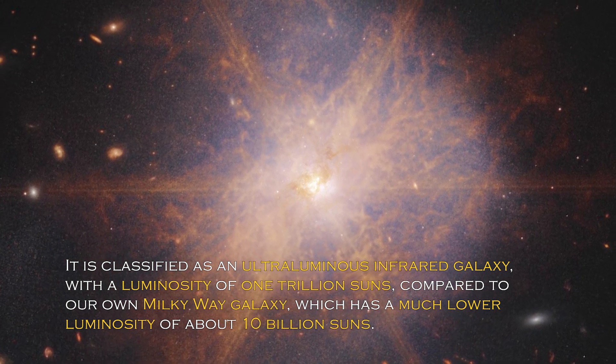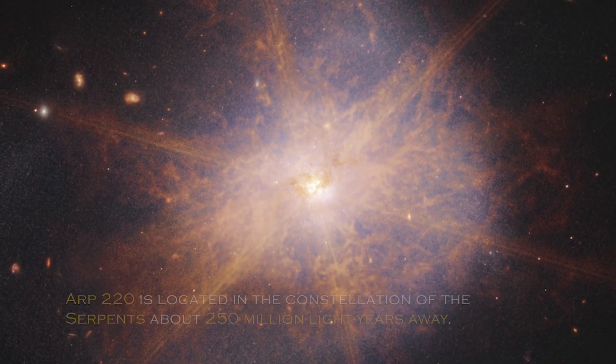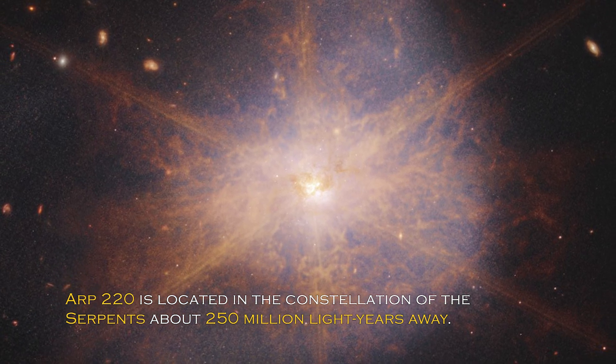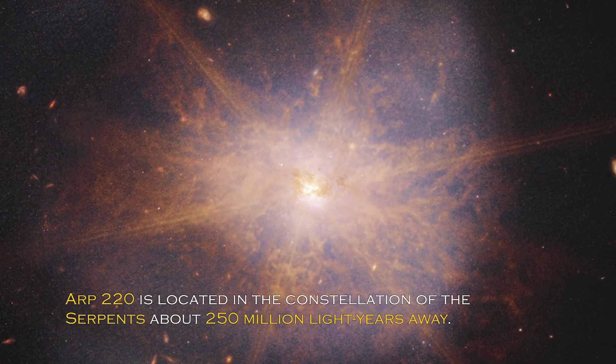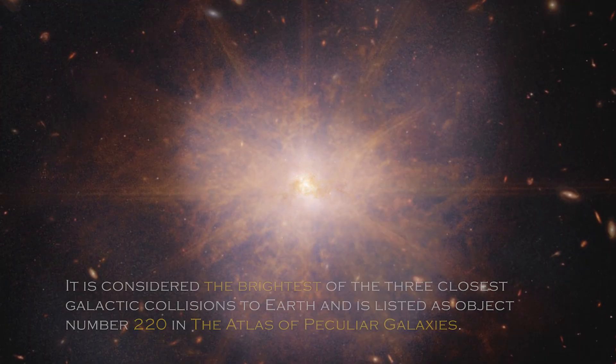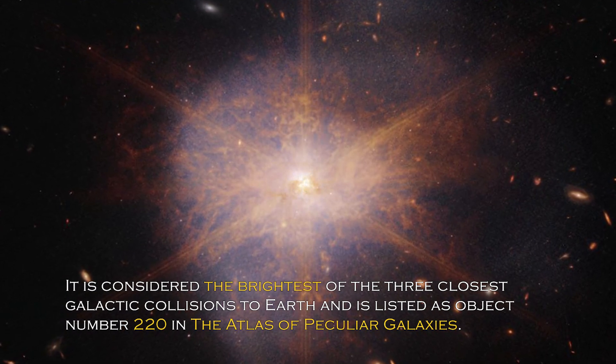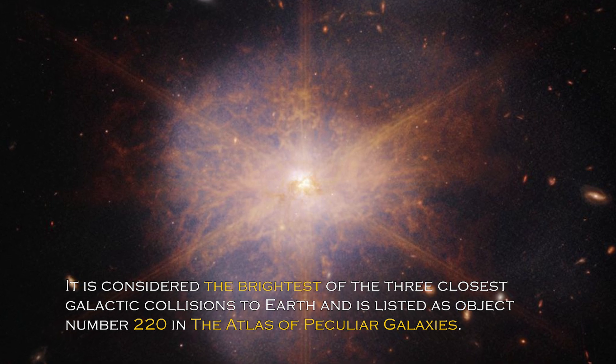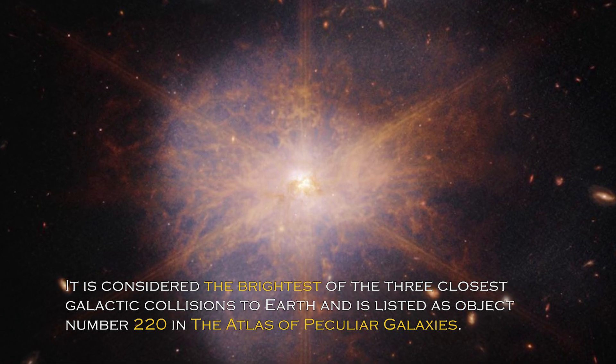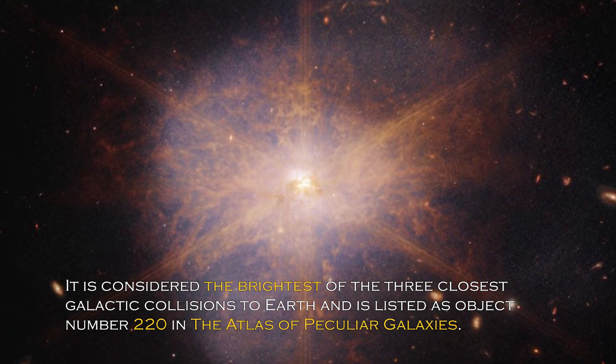ARP 220 is located in the constellation of the Serpent, about 250 million light-years away. It is considered the brightest of the three closest galactic collisions to Earth, and it is listed as object number 220 in the Atlas of Peculiar Galaxies.